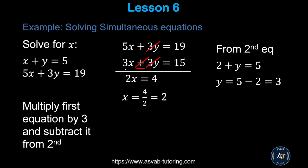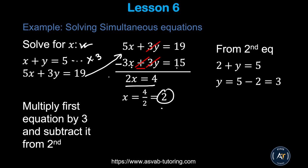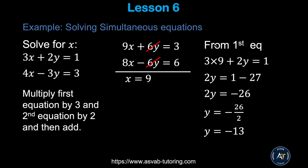Now we'll solve simultaneous equations — two equations with two unknowns. For x + y = 5 and 5x + 3y = 19: eliminate y by multiplying the first equation by 3 to get 3x + 3y = 15. Subtract from the second equation: 5x − 3x = 2x and 19 − 15 = 4, so 2x = 4, giving x = 2. You can verify by plugging back into either equation.